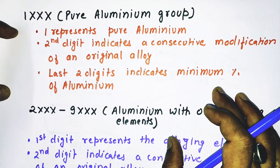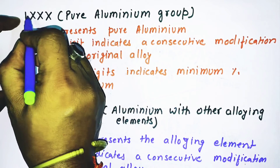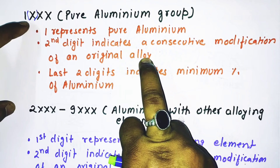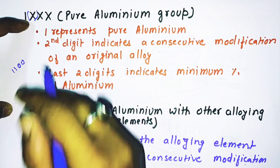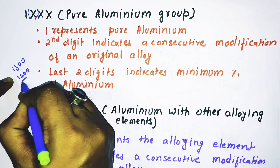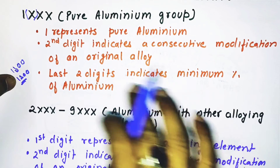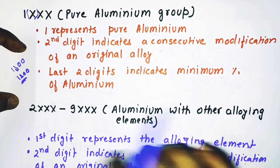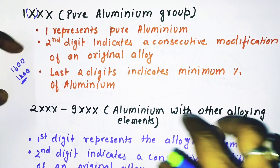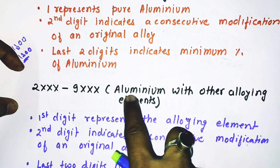For the 1xxx series, which is the pure aluminum group, the first digit 1 represents pure aluminum. The second digit indicates a consecutive modification of an original alloy — for example, if alloy 1100 is modified, the second digit changes and we write 1200. The last two digits indicate the minimum percentage of aluminum content, which I'll explain further in this video.